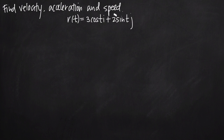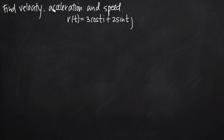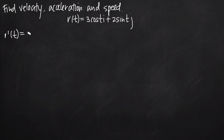We notice right off the bat that this is a vector function, also called the position function. We know from our courses in derivatives and integrals about position, velocity, and acceleration. Velocity is the derivative of the position function. So we're going to take its derivative, r'(t), which we also call velocity v(t). Taking the derivative of this vector function will give us our velocity function.